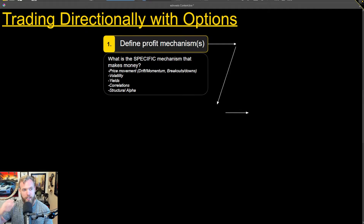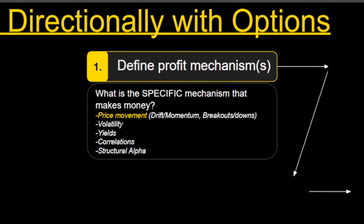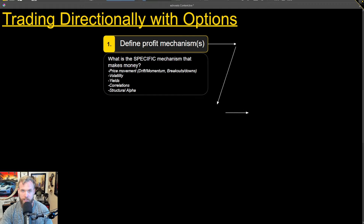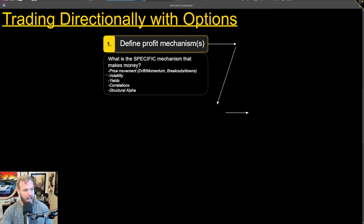We have to figure out how things make money first. Here are a couple of examples: price movement, changes in volatility, yields if something pays a dividend, correlations, and so on. When we're talking about meme stocks, there are some very specific traits that come with them. But the main things we're trading when looking at meme stocks are price movement and volatility, which we'll talk more about.